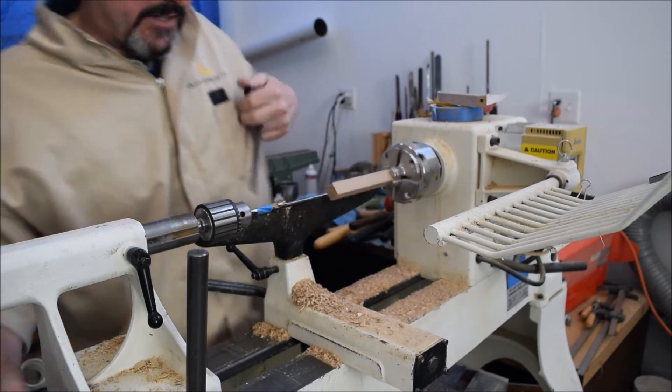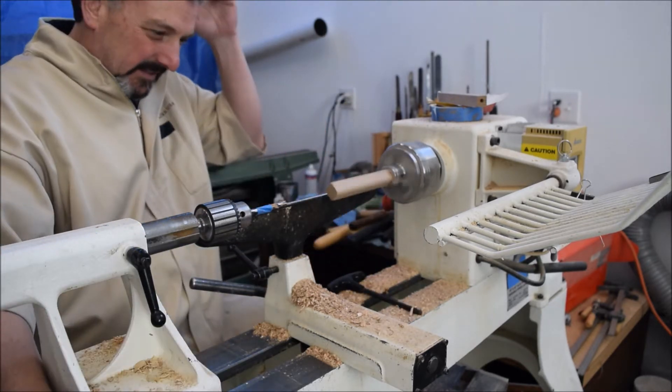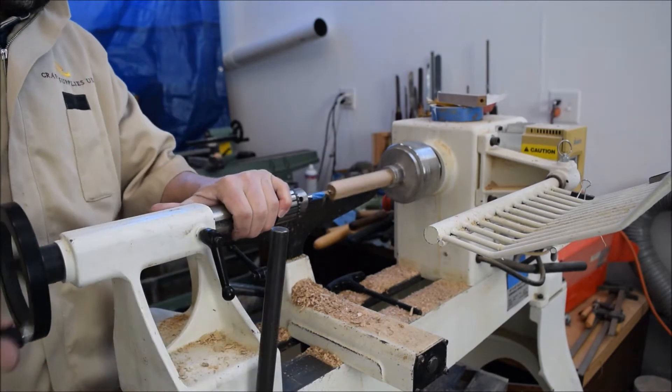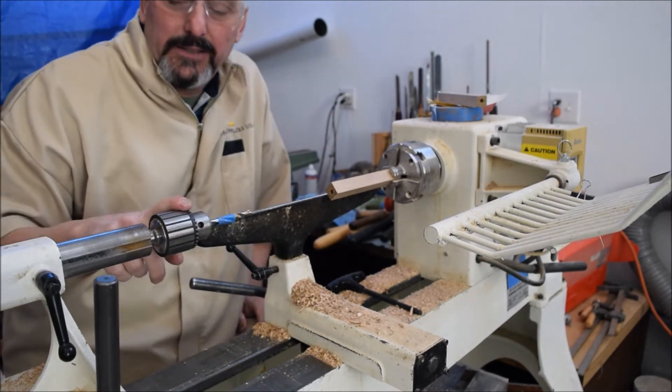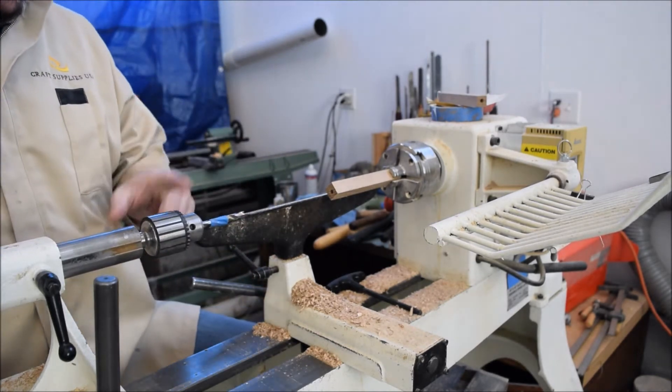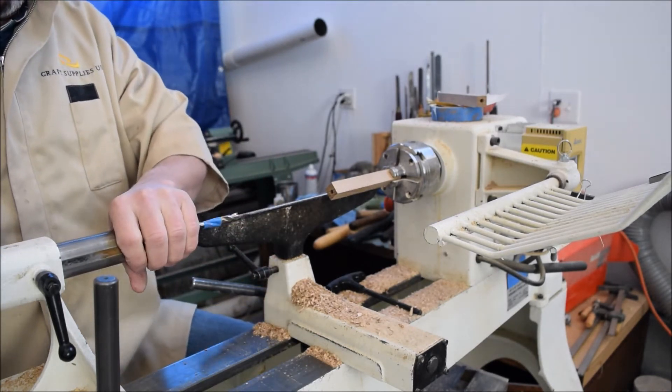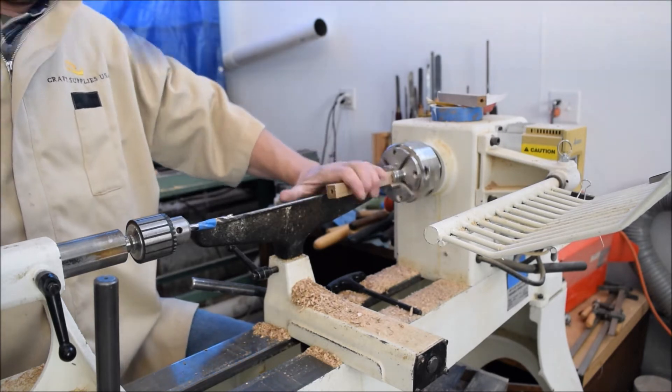Anyway, if you're batching these, get your Jacob's Chuck set up with a seven millimeter drill bit, get your nose ready, mount it in the jaws.